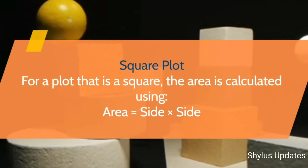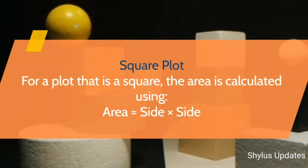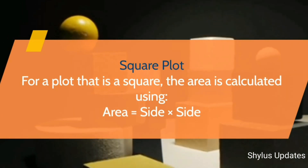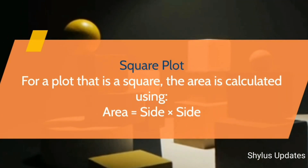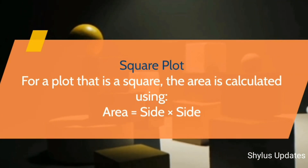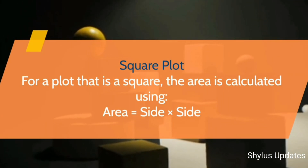For a plot that is a square, the area is calculated using: Area equals side times side.